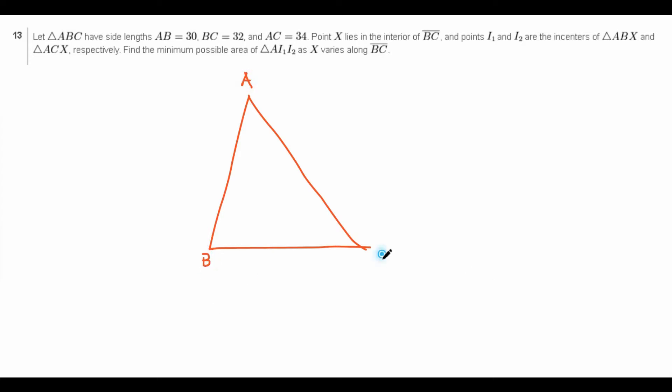So first off, this is a geometry problem, so of course we have to first draw a diagram. Okay, so let's draw the two circles. Let's see, there we go, good enough. And this is AI1, and this is AI2. So we have this little thing going on. Okay, so we want to find the minimum possible value of the area of triangle AI1, I2, as X varies along BC.